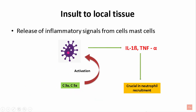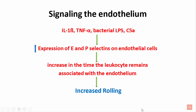When there is insult to the local tissue, there is release of inflammatory signals mainly from the mast cells. Complement factors C3a and C5a cause activation of these mast cells, which in turn release mediators like interleukin-1-beta and tumor necrosis factor alpha, crucial in neutrophil recruitment. Release of interleukin-1-beta, TNF-alpha, bacterial lipopolysaccharide, and complement C5a causes increased expression of E- and P-selectins on the endothelial cells, increasing the time the leukocyte contacts the endothelium and causing increased rolling.